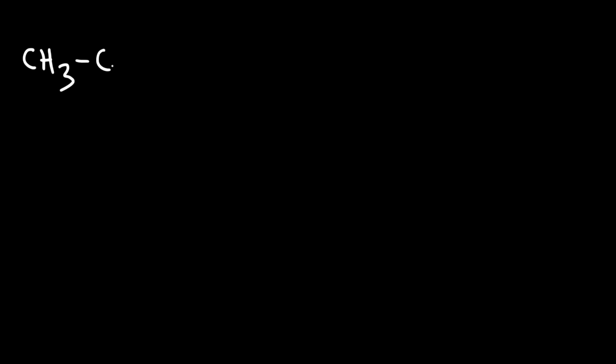Now let's move on to our next example, which is going to be CH3CH2-C triple bond CH. Go ahead and write the common name for that alkyne, and also write the IUPAC name. Since we're here already, let's go ahead and do that. Let's start with the IUPAC name actually.